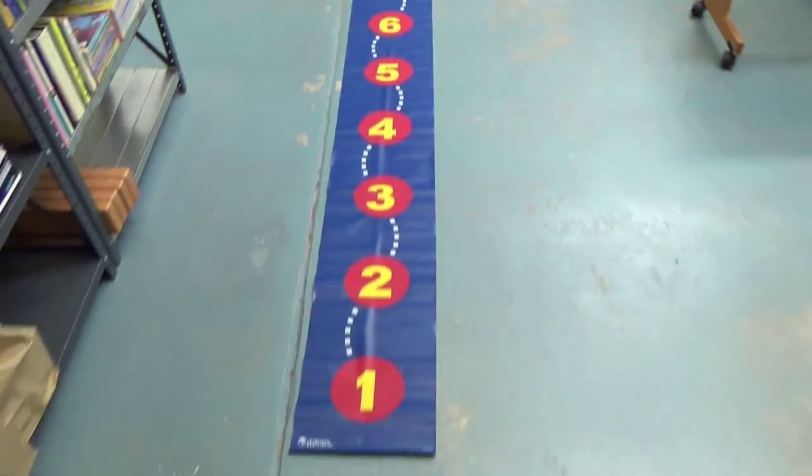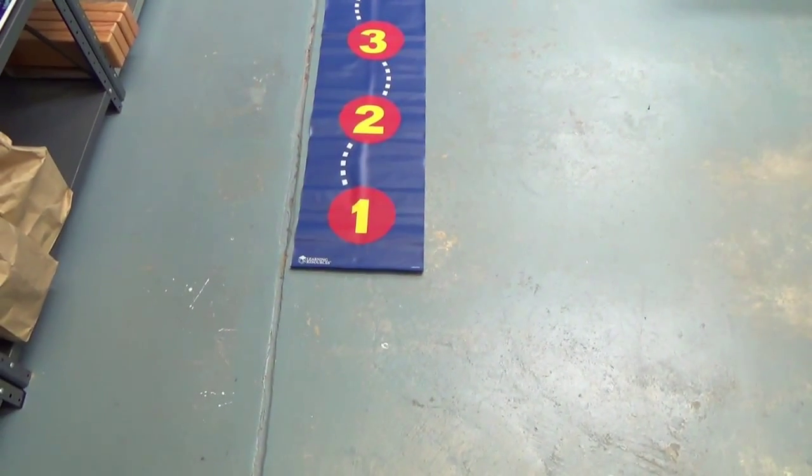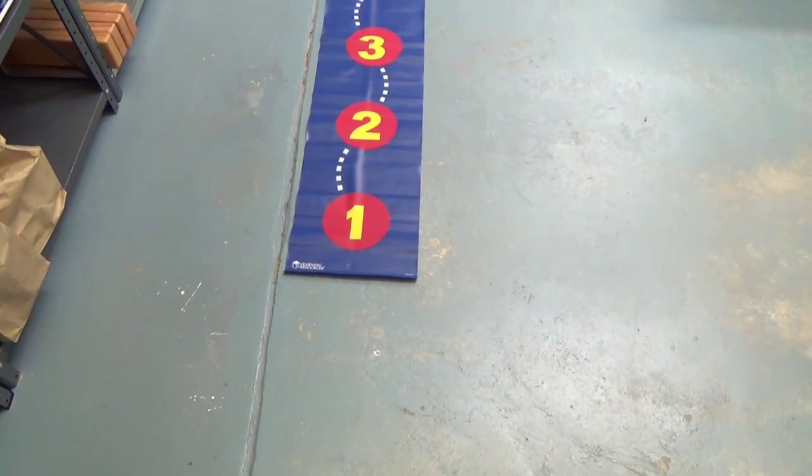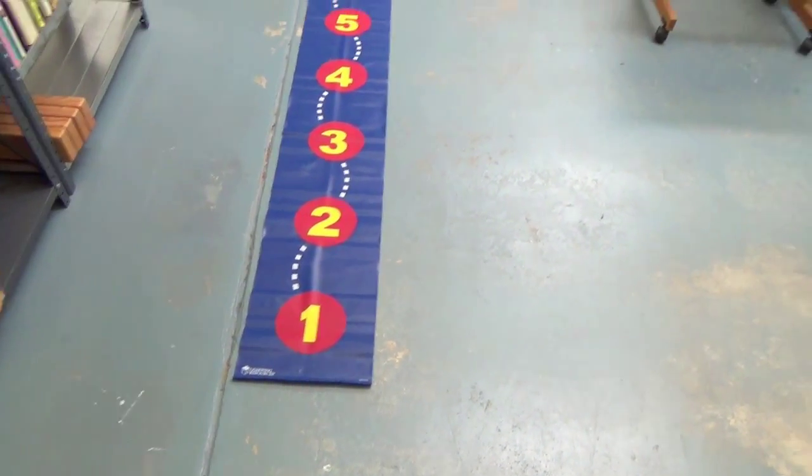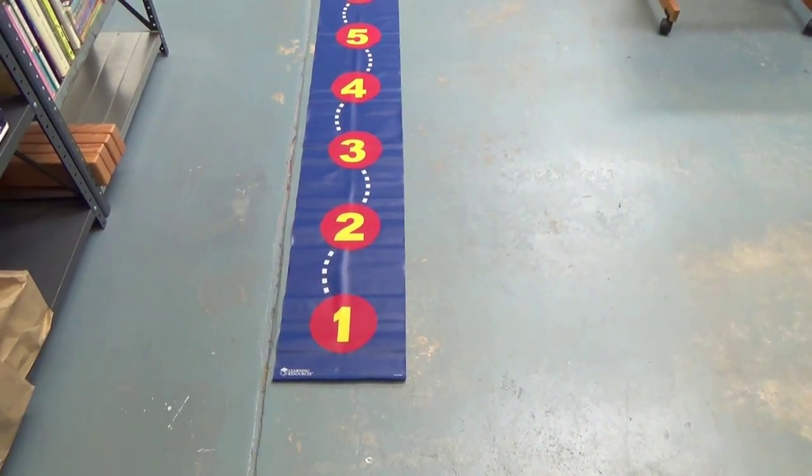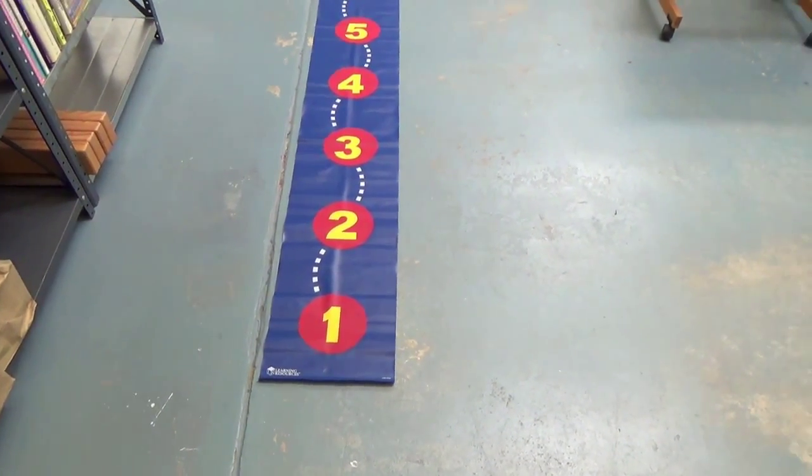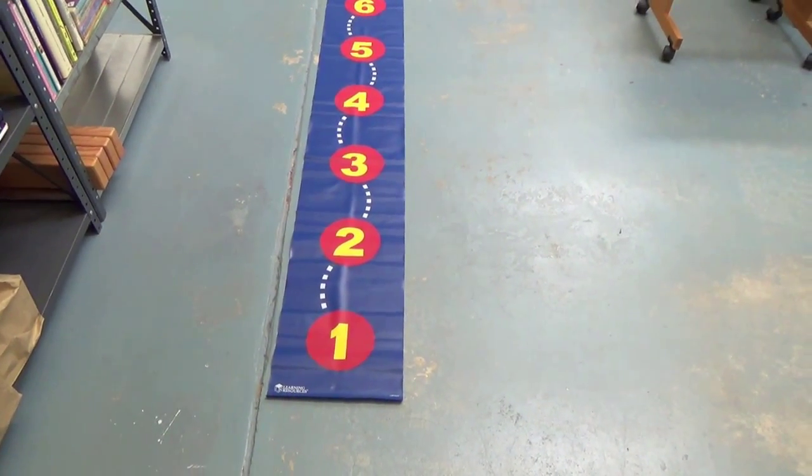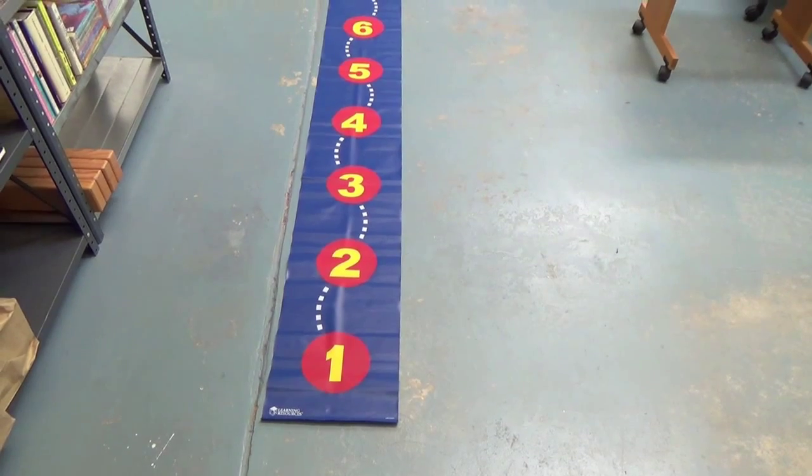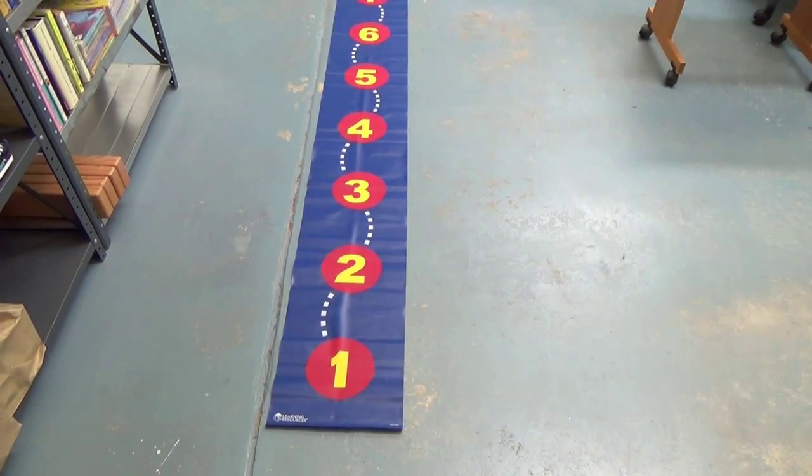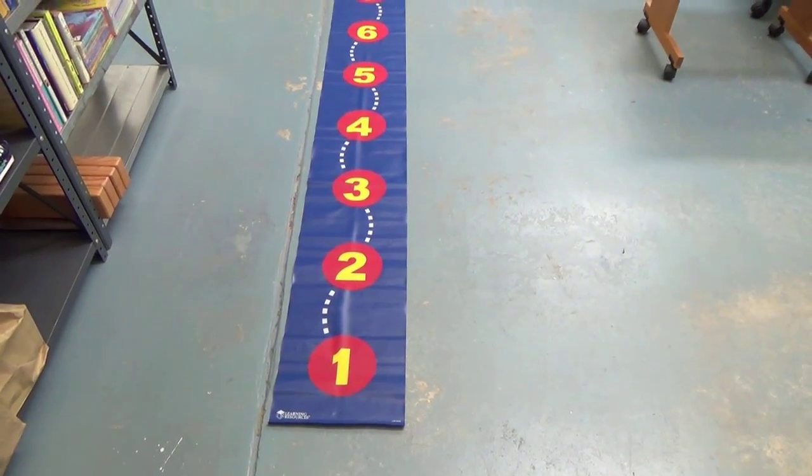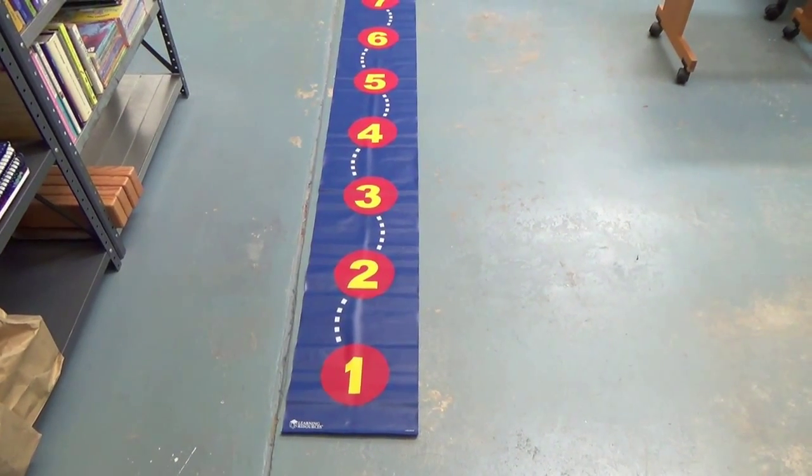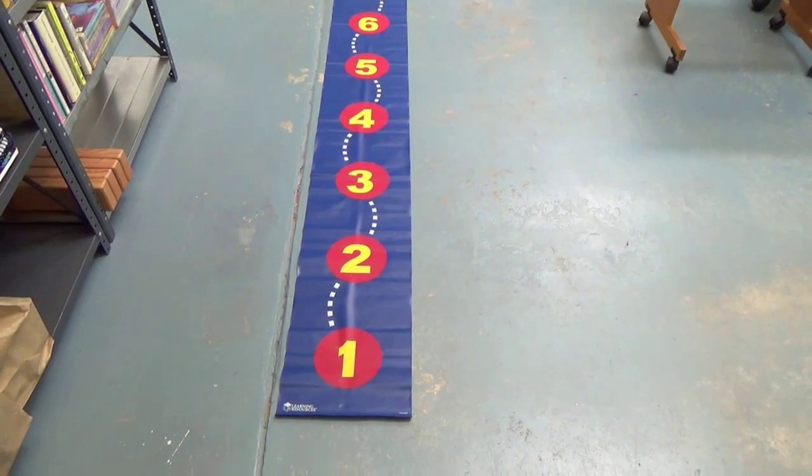And it sits on the floor and your child can literally walk the numbers. There is a link. If you'd like to purchase one just like this, there is a link on the early gifted manual. Or if you want to make just a temporary one, you can always go outdoors with some sidewalk chalk and find a nice expanse of concrete and just write the numbers in with sidewalk chalk. And that does the job pretty well too.